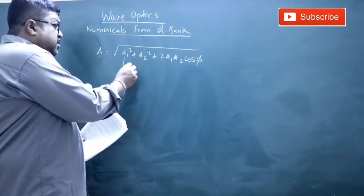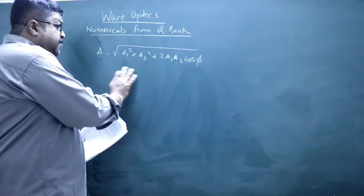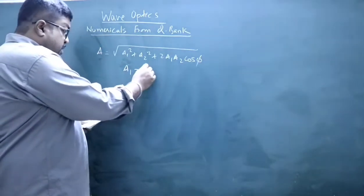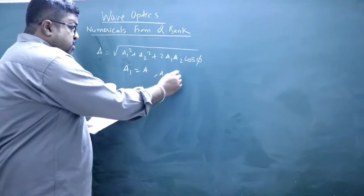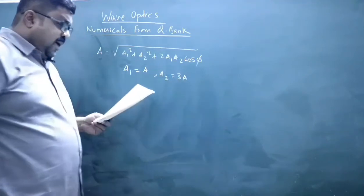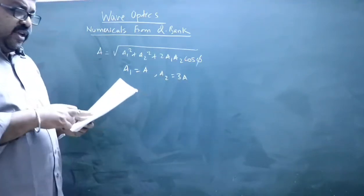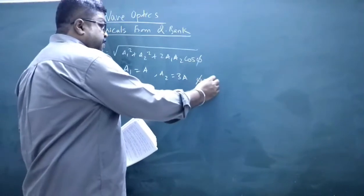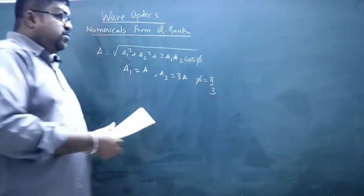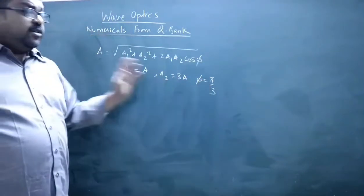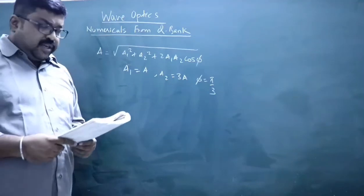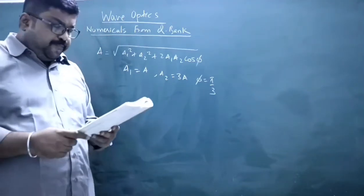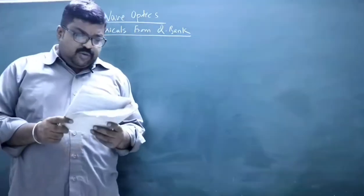In this problem, A₁ = A, A₂ = 3A, and the phase difference φ = π/3. If you substitute these values, you can get the value of the resultant amplitude. This is how you have to proceed.